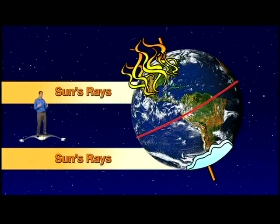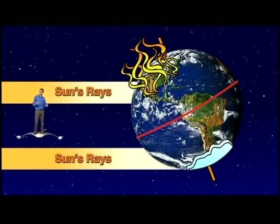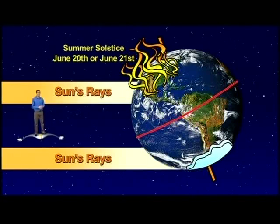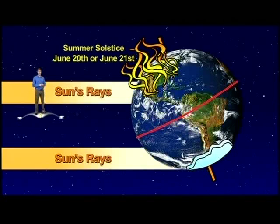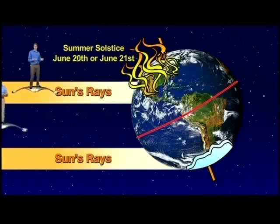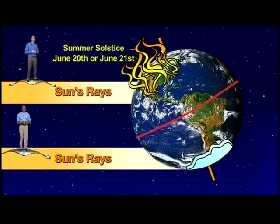When we in the northern hemisphere are tilted most directly towards the sun, we soak up solar energy to the max. That day is called the summer solstice, and it usually occurs on June 20th or 21st. At this point, the sun's rays shine most directly on us in the United States. We get more energy per square inch, and thus it's hotter.